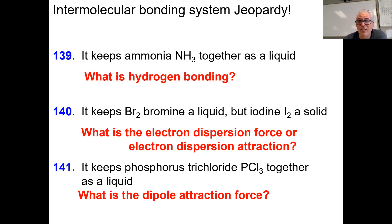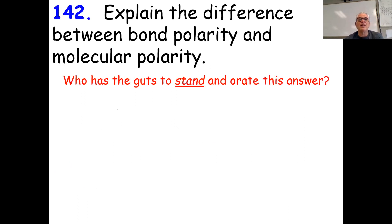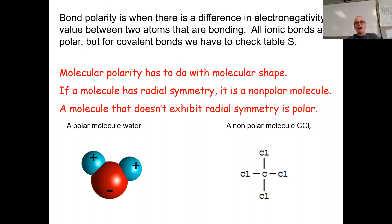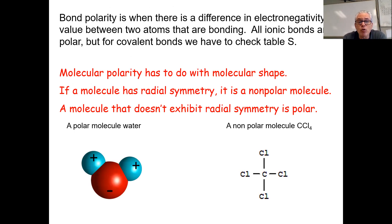Now the difference between bond polarity and molecular polarity. Bond polarity occurs when there's a difference in electronegativity value. In water, oxygen has a much higher electronegativity than hydrogen, so oxygen pulls the electrons harder. That means the oxygen side is negative most of the time and the hydrogen sides are positive most of the time — those bonds are polar.